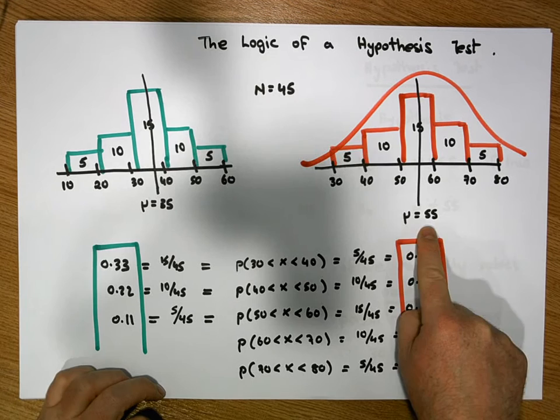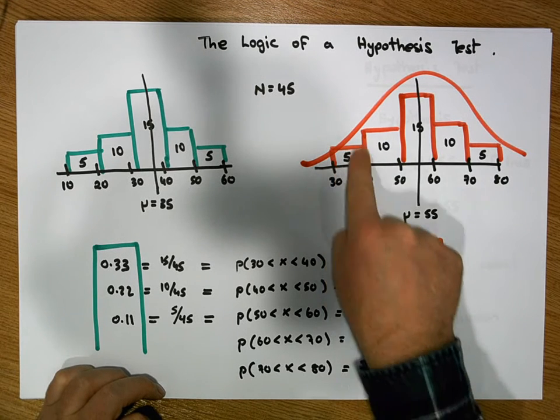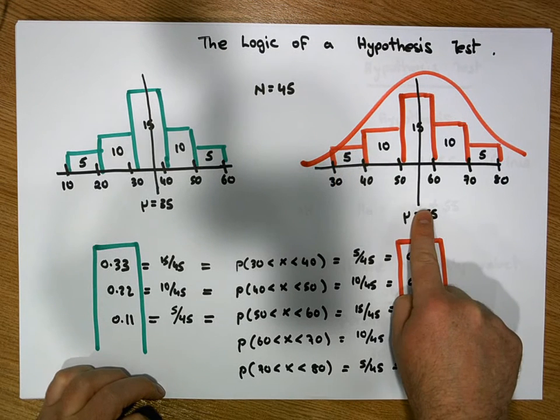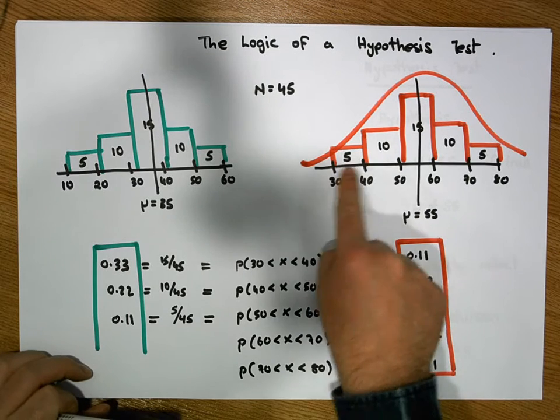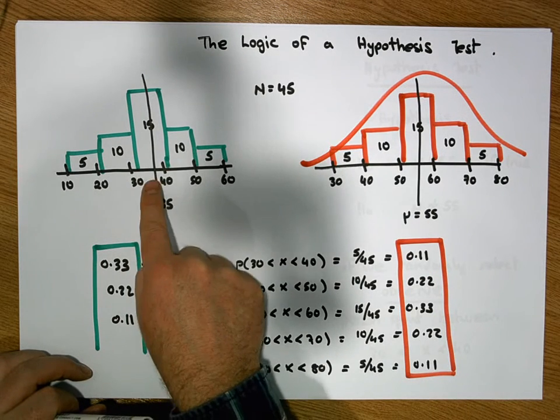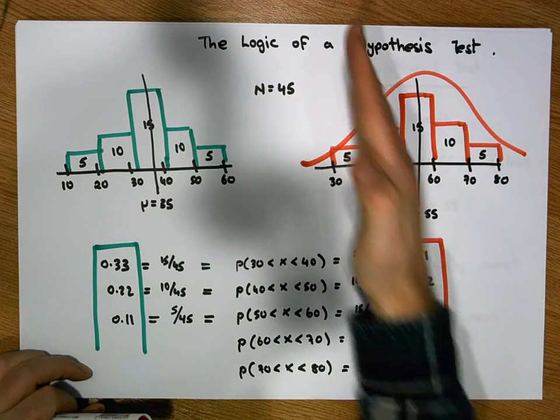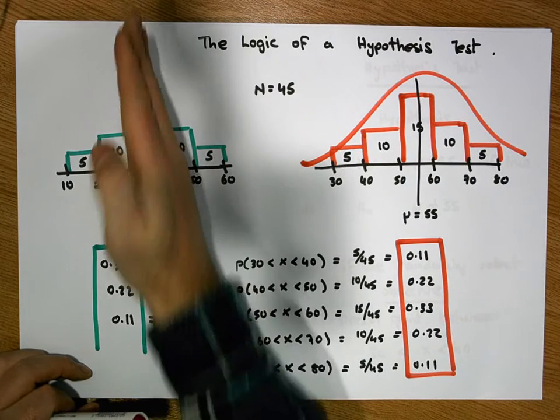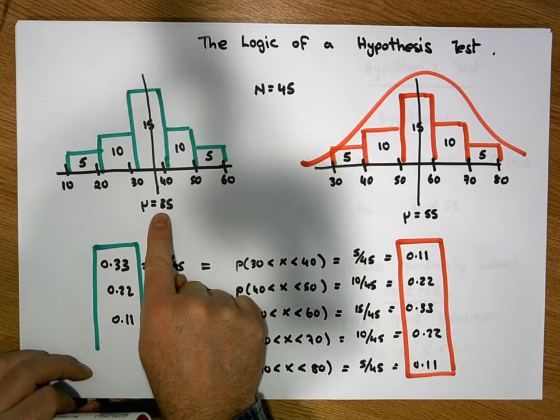So if the probability of observing something in here is small, if this is true, well, the probability of us observing something in here would be large if the distribution wasn't centered on 55 and was actually centered around 30 to 40.